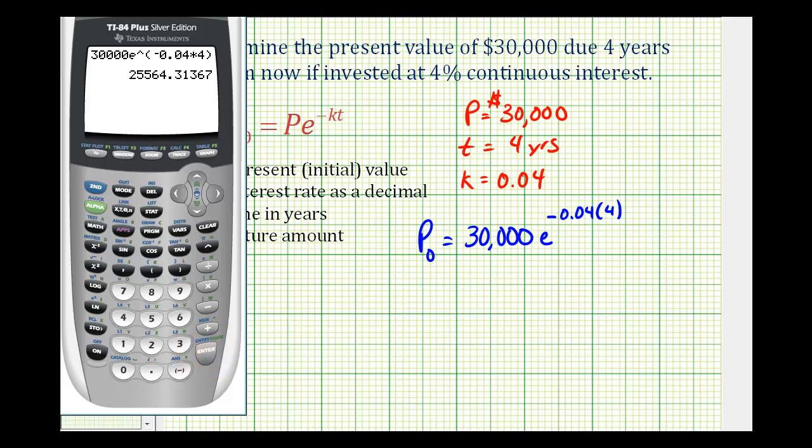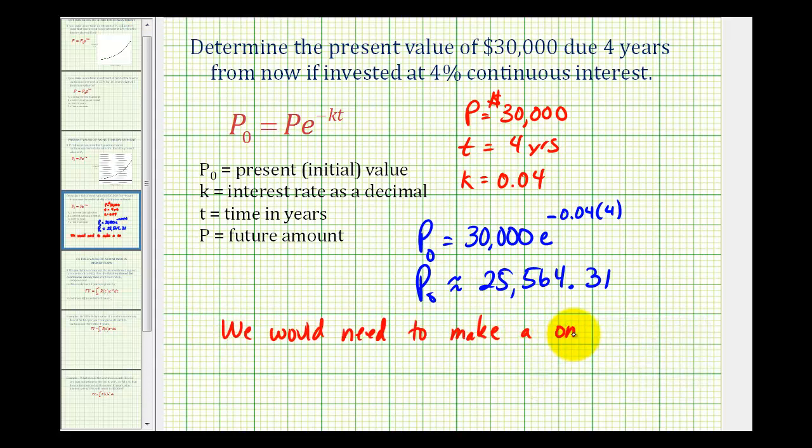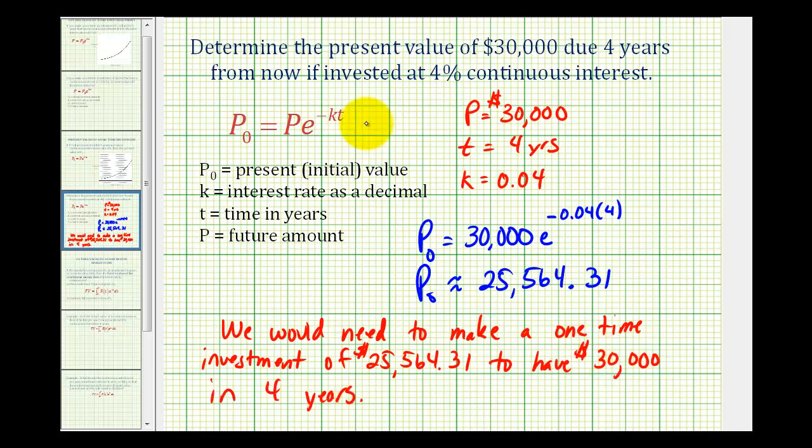So the amount would be twenty-five thousand, five hundred sixty-four dollars and thirty-one cents. Which means we would need to make a one-time investment of $25,564.31 to have $30,000 in four years if the account earns four percent continuous interest.